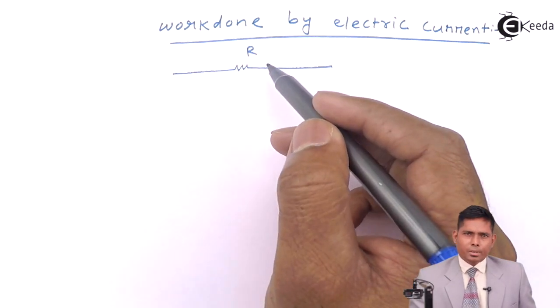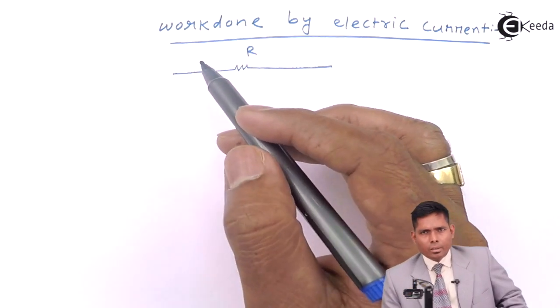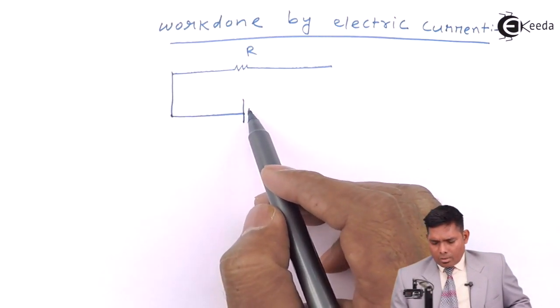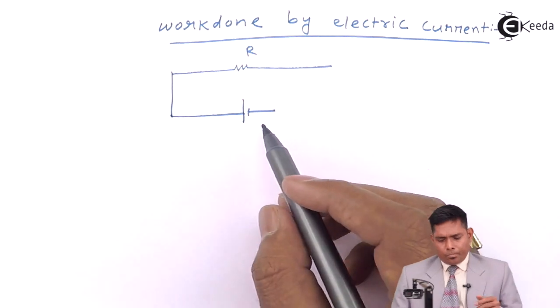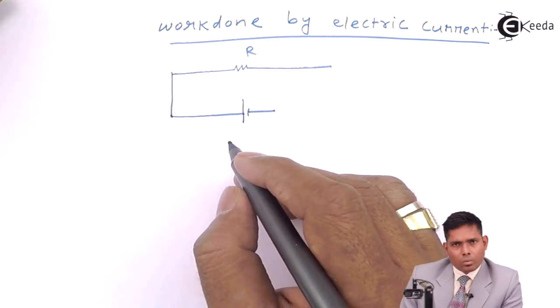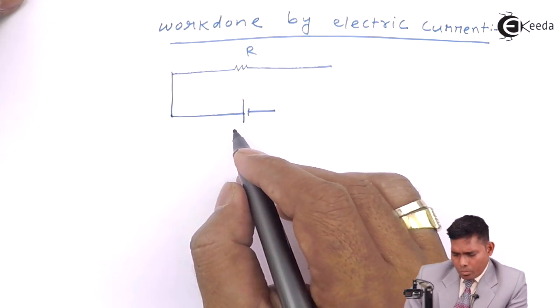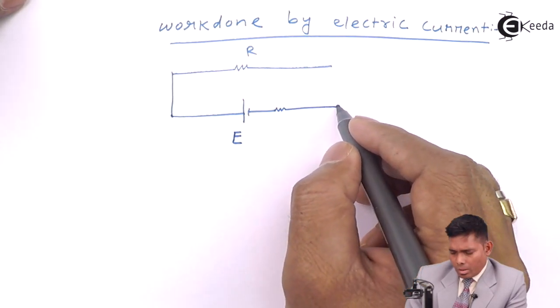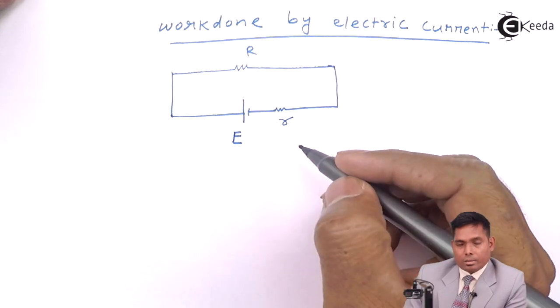that is the external resistance to be connected with the battery. There is a cell whose EMF is E, internal resistance is r.